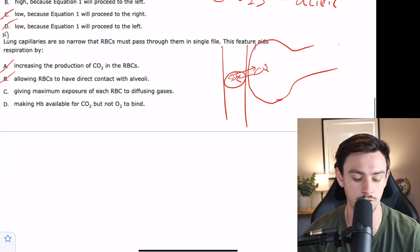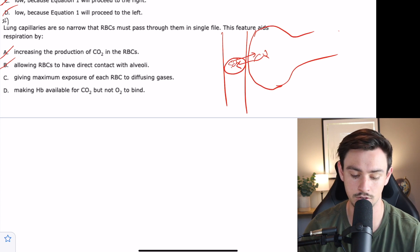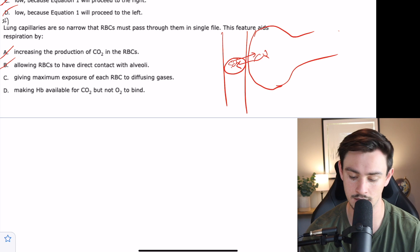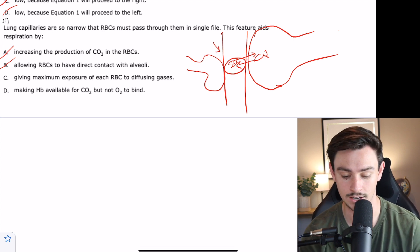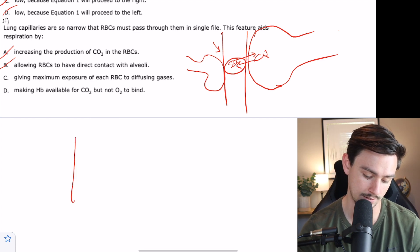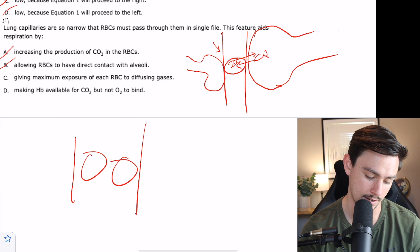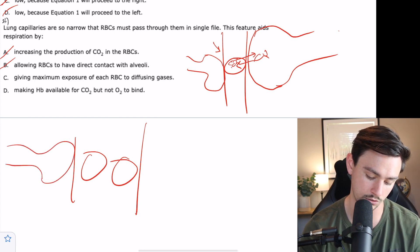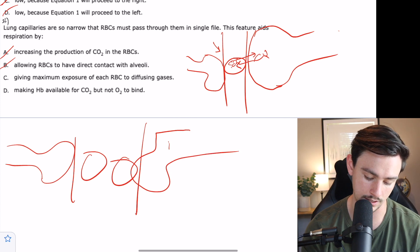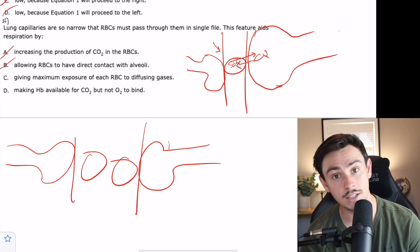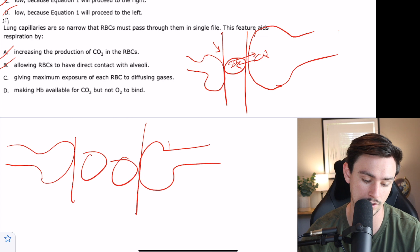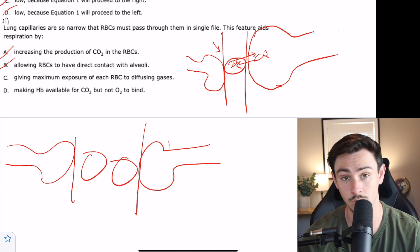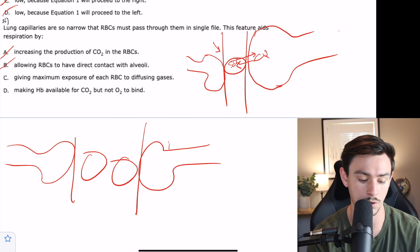C says giving maximum exposure of each red blood cell to diffusing gases. That's true. We're going to increase surface area because you can imagine if this thing is surrounded by alveoli, you're going to get more surface area touching, that's going to lead to more gas exchange. Whereas if you had a giant capillary, the alveoli are only going to touch the red blood cells on one side. That would decrease the surface area, which means you would not get quite as much diffusion. So C would be correct because we're looking for something that's going to maximize exposure.